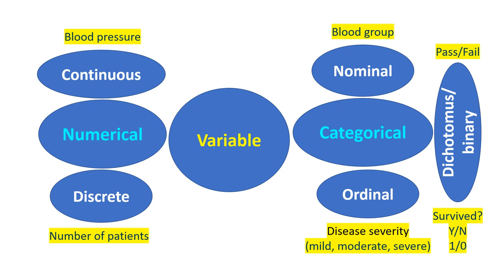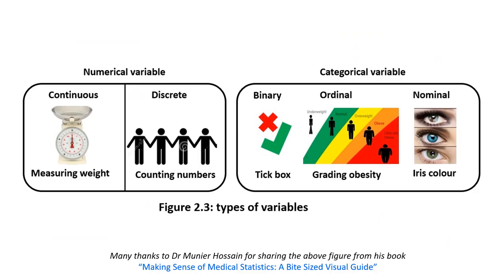Blood pressure is a continuous variable. How many people are there in the room is a discrete variable — it has to be one, two, three. But for blood pressure, you can have decimal points, which is why it is continuous.